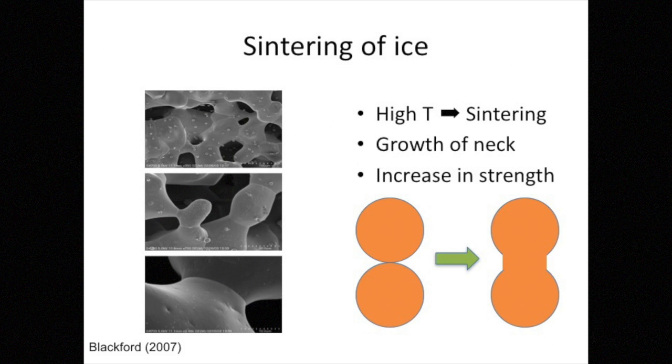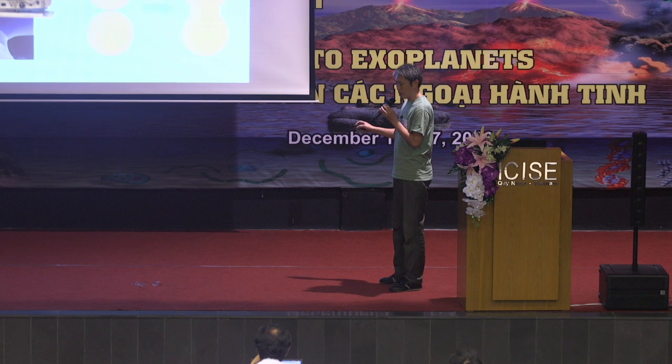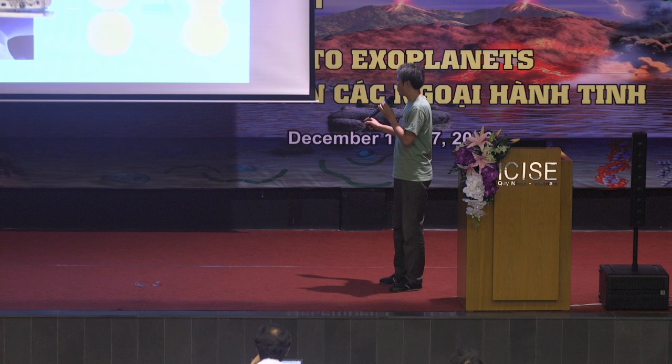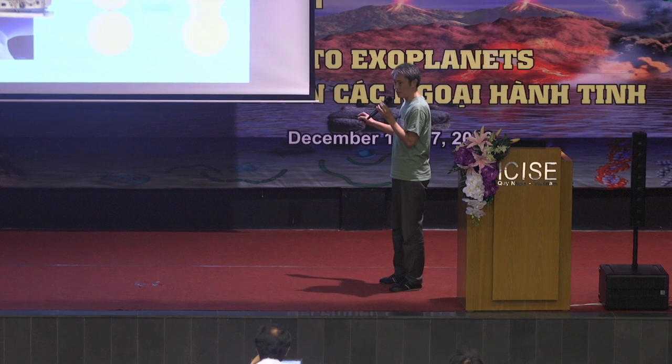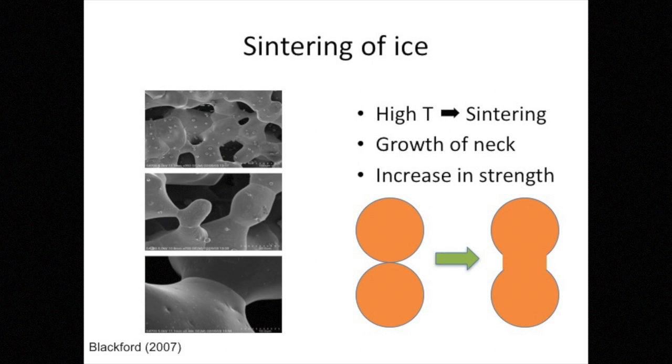Because ice is volatile material, ice molecules easily sublime or diffuse on the icy grains if the temperature is high. If the temperature is high, a molecule on the surface of grains sublimes and condenses at the neck because the vapor pressure around this area is high and vapor pressure around the neck is low.